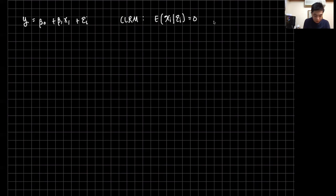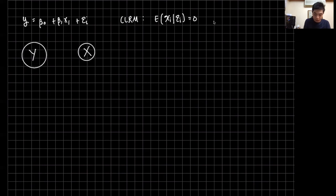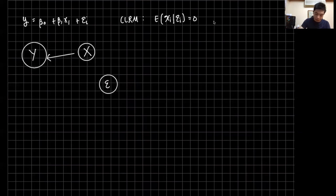That happens when — let me draw a diagram — we have our variable Y, our dependent variable, and we want to explain Y using our X variables. So we use X to explain Y. But the problem is our error term Epsilon has a relationship with x_i. In an ideal world this should not be the case; we should not have a relationship between X and Epsilon, between our error term and the regressors in the model.